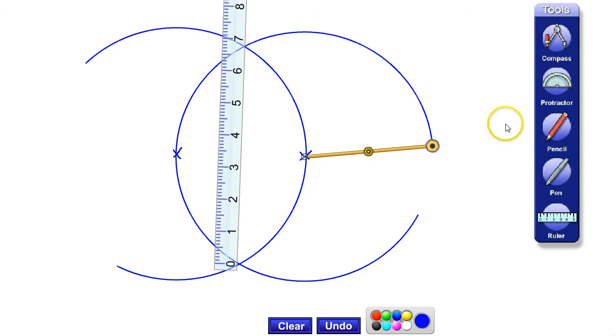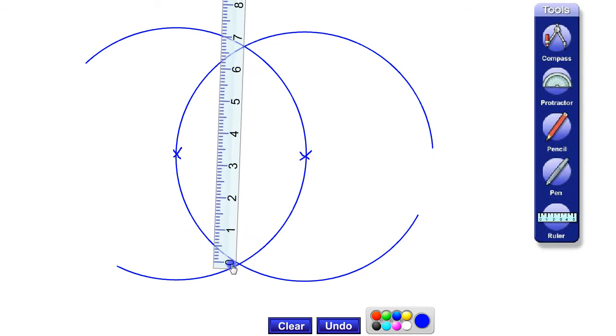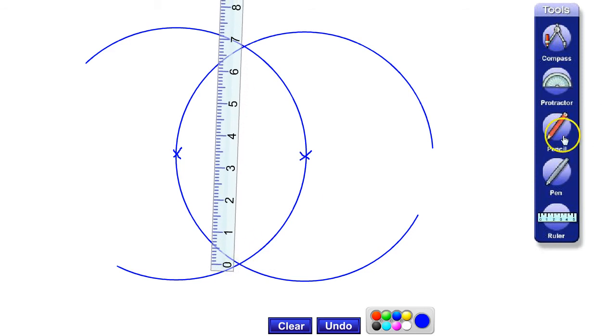So we get our pencil or our pen. And you get the idea roughly. Let's do it in pencil. You join these two points up like so. And a little bit inaccurate. But there's our perpendicular bisector.